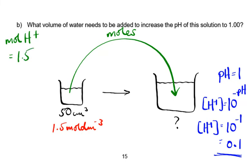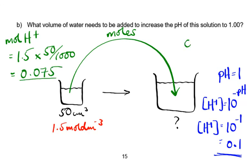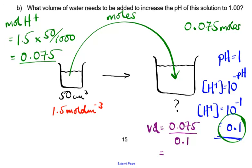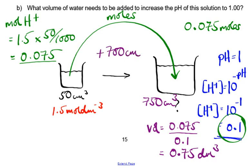Original moles of hydrogen ions = concentration × volume = 0.075 mol. In the larger beaker we still have 0.075 mol. Since the final concentration is 0.1 mol dm⁻³, the final volume = moles ÷ concentration = 0.075 ÷ 0.1 = 0.75 dm³, which is 750 cm³. So the volume of water that needs to be added is 700 cm³.